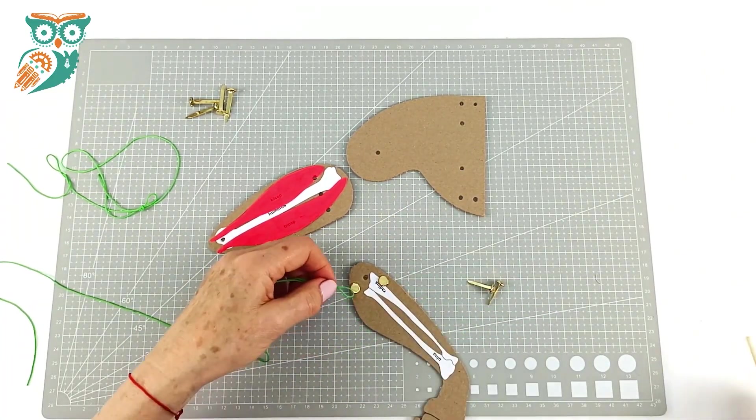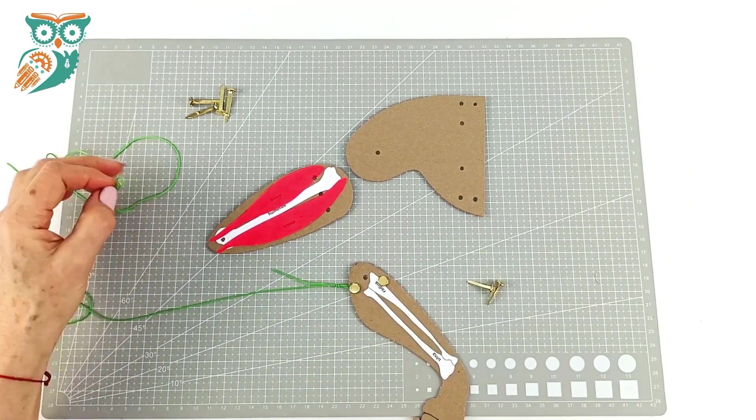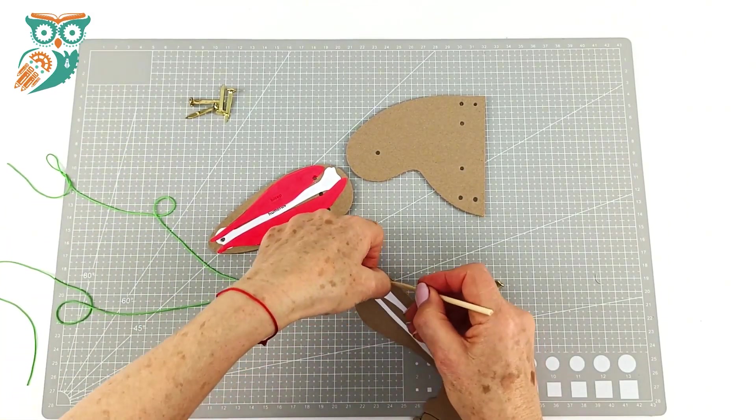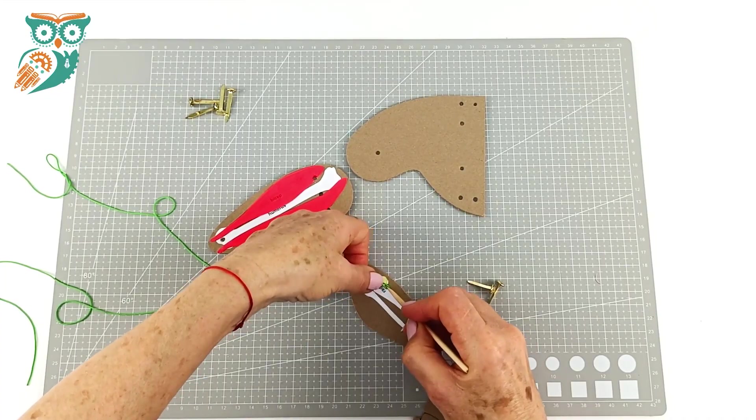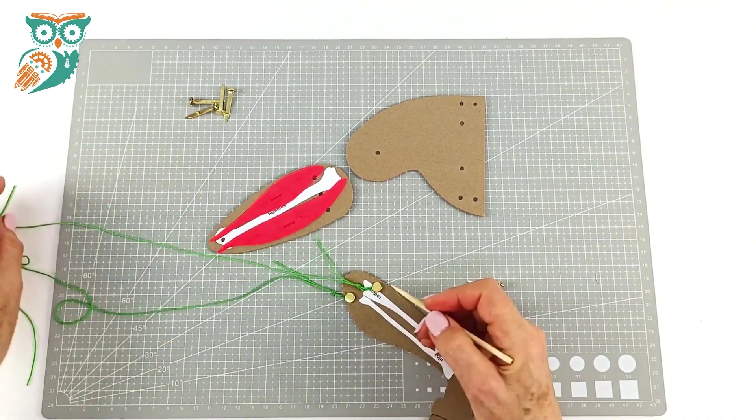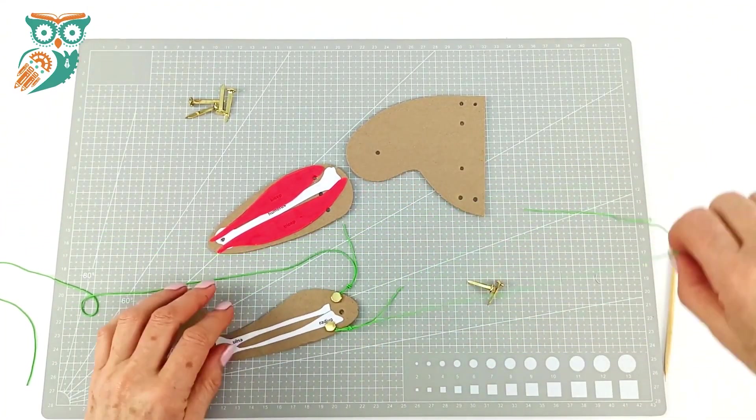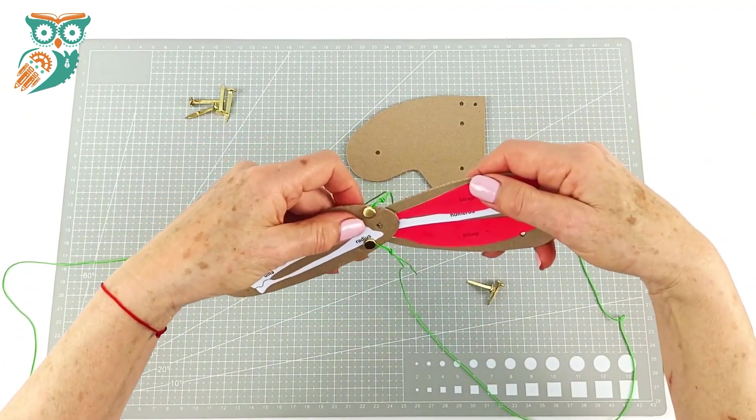Now we're going to take a string. We're going to take one just using a skewer here to make this a little easier and we're going to loop it around one and then we're going to do the other one. So the string is attached at the top of the forearm piece on both of those. Tighten them up a little bit.